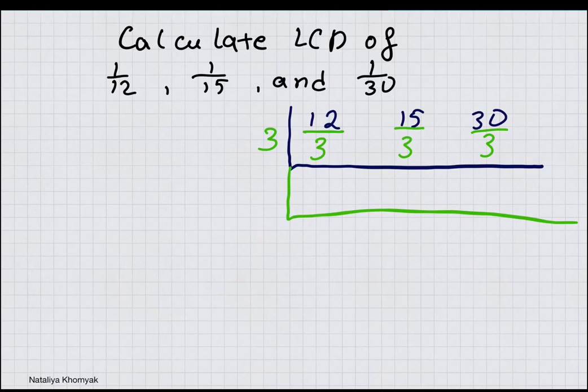3 goes into 12 four times, 3 goes into 15 five times, and 3 goes into 30 ten times. So we have 4, 5 and 10.